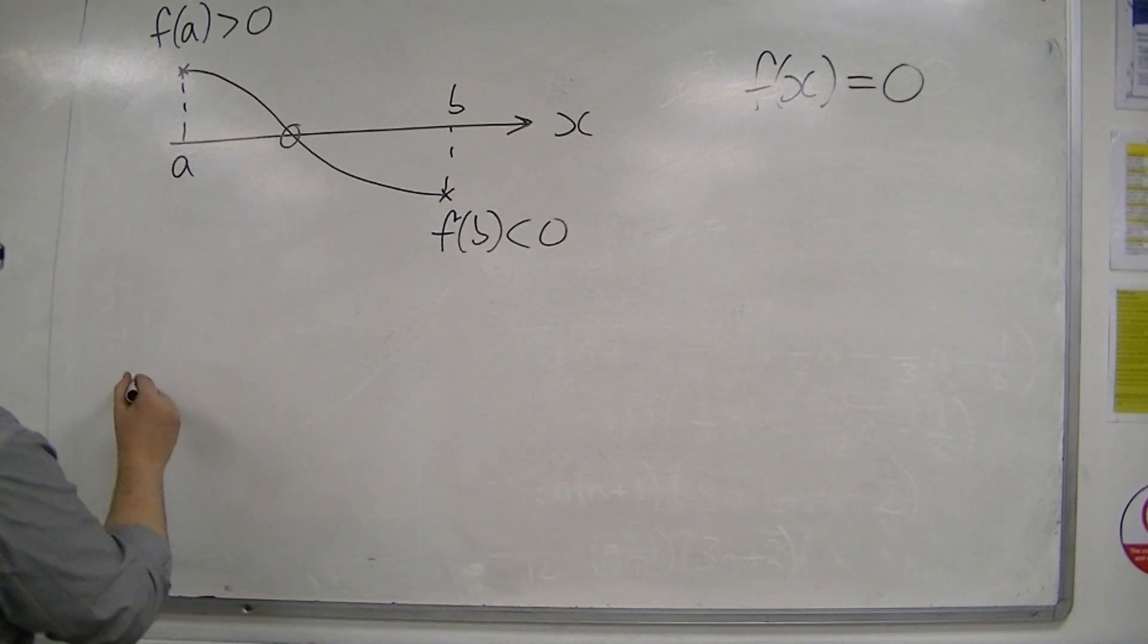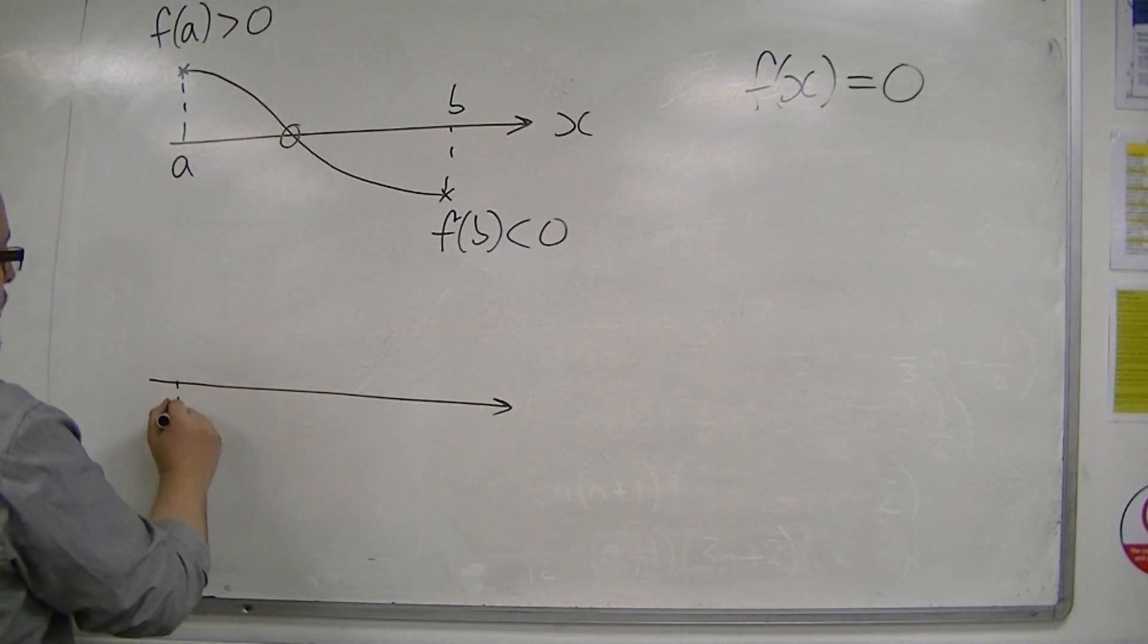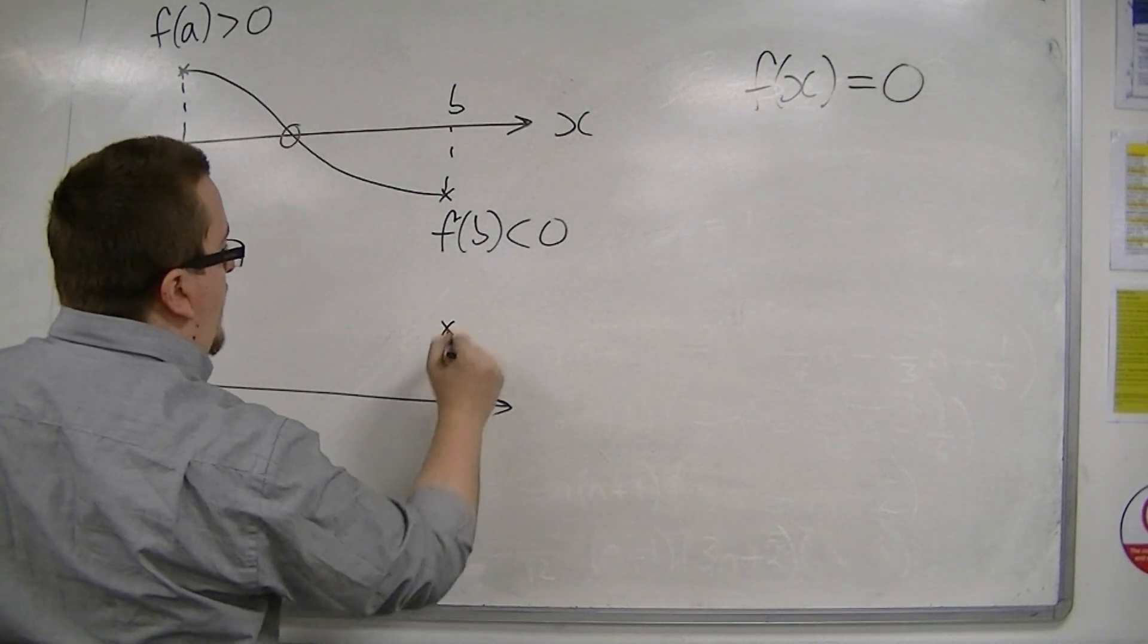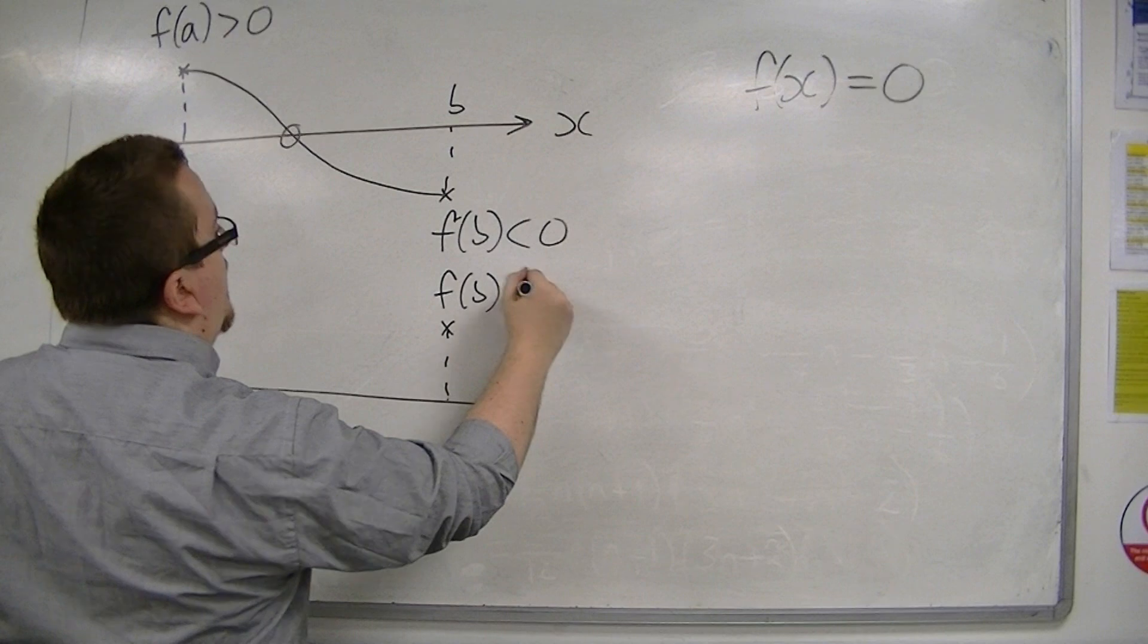Or, as we've just seen, if we were looking at a point, we plugged in a point A, and we found that f of A was negative. And then we plug in point B, and we find that f of B is positive.